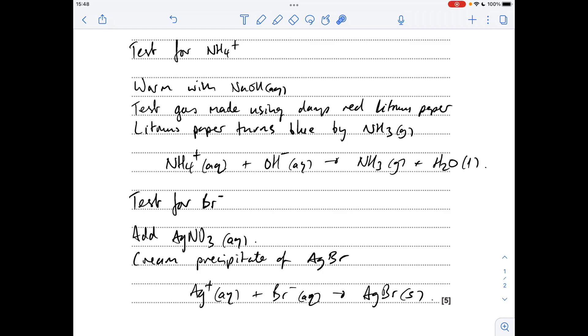I have checked the mark scheme and they aren't fussed on seeing the extra test for the bromide ion, which is the addition of aqueous ammonia. You could confirm that it's a bromide by adding some concentrated aqueous ammonia to that and that would dissolve, but that's not actually required for this particular question.